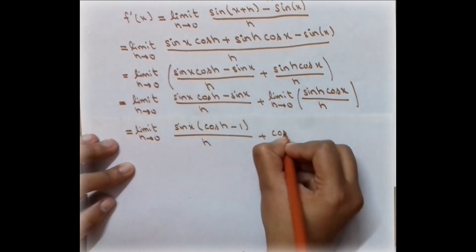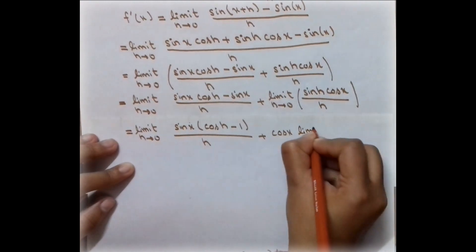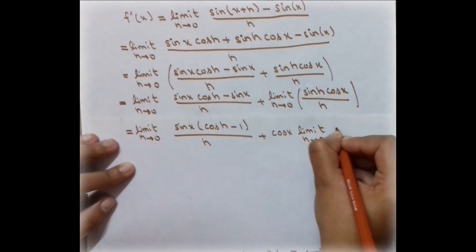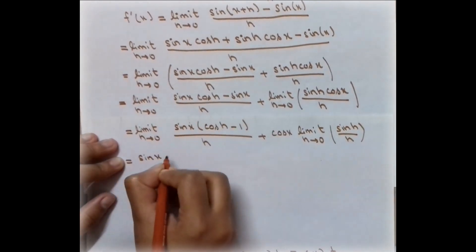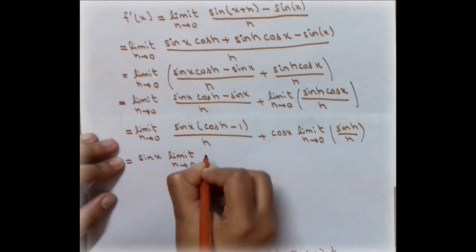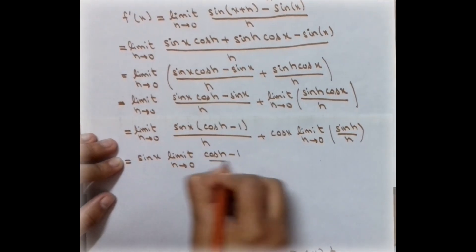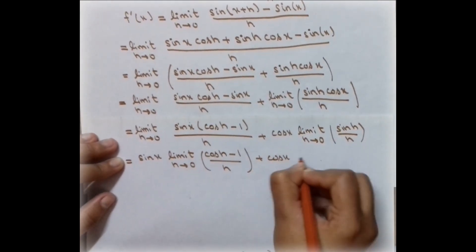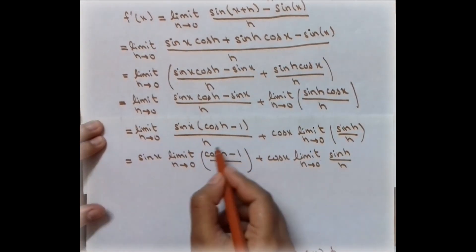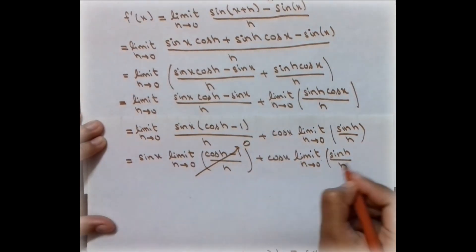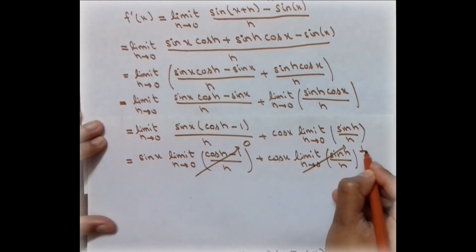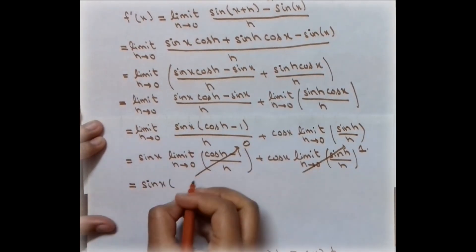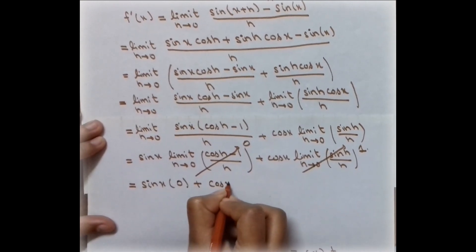We write cos(x) outside the limit. Now we apply the known limits: by the sandwich theorem, the limit as h approaches zero of sin(h)/h equals 1. The limit as h approaches zero of [cos(h) minus 1]/h equals 0.